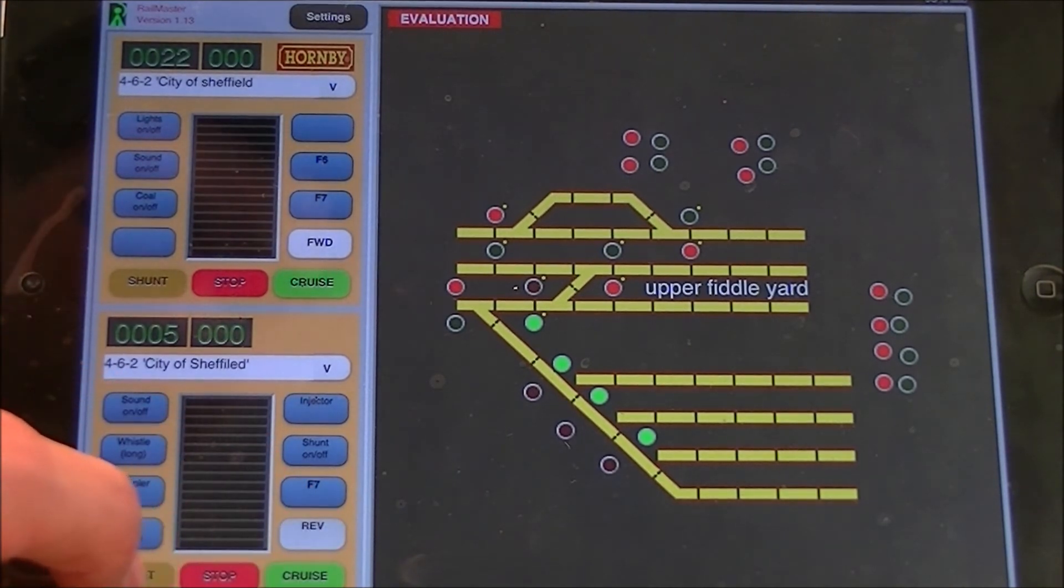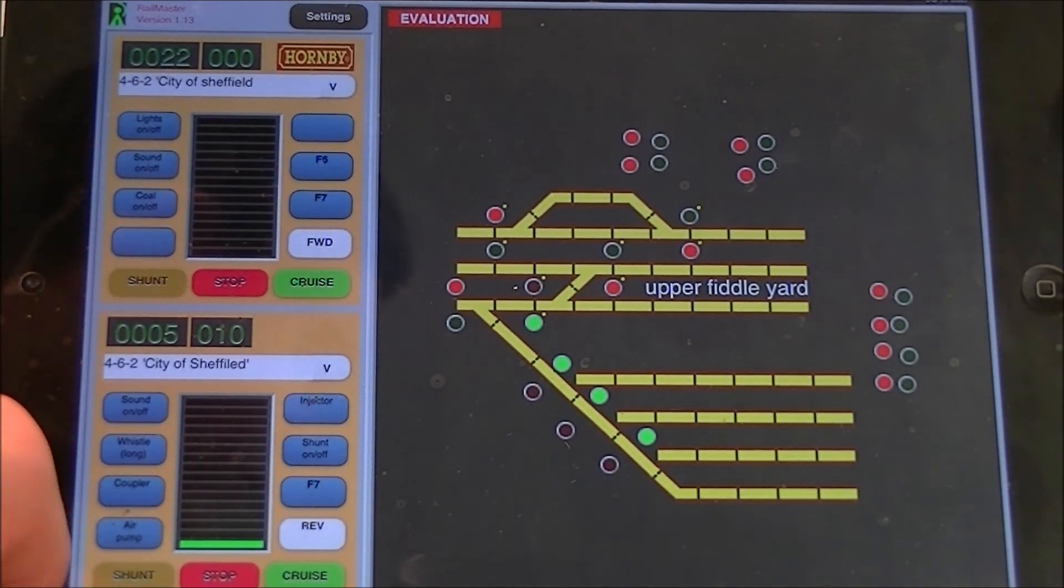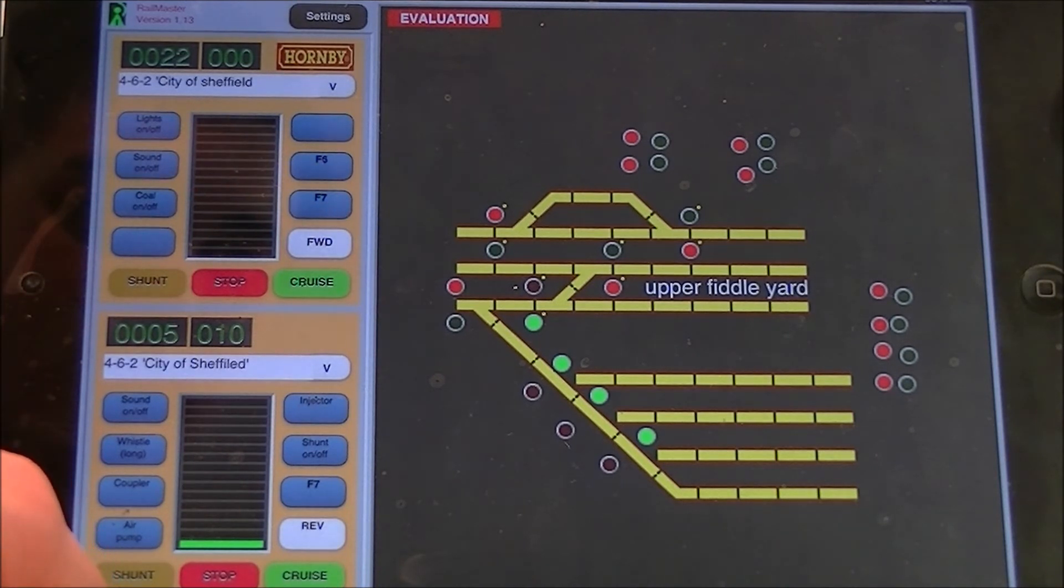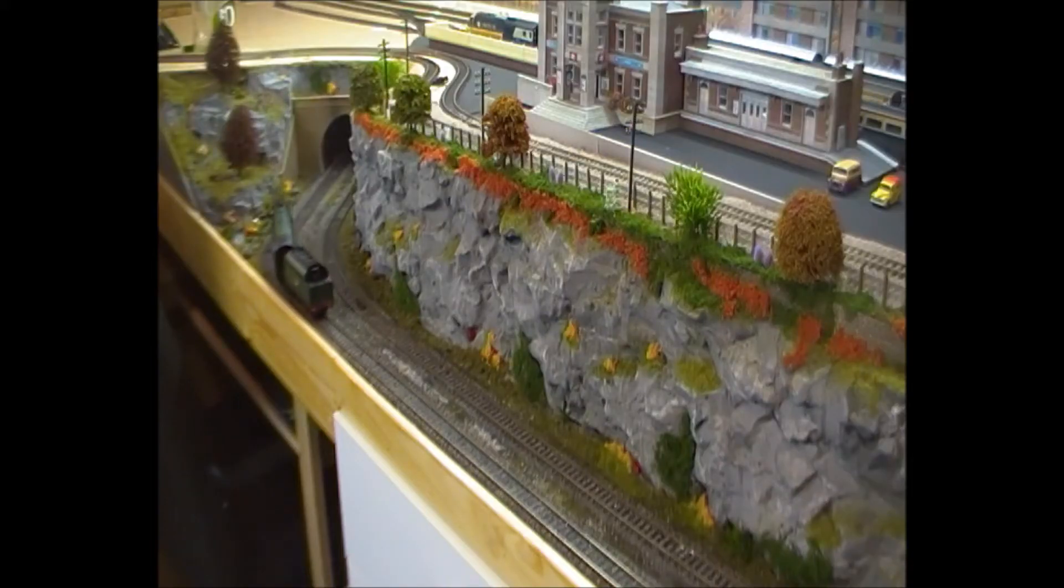Then you can change the loco's direction, bring it the other way, all the usual kind of things you'd expect from an app that controls your trains. As you can see the loco's coming backwards there.